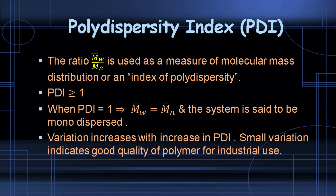The polydispersity index (PDI) is the ratio of weight average molecular mass divided by number average molecular mass. Generally, PDI is greater than 1. If PDI equals 1, then the weight average molecular mass equals the number average molecular mass, and in this case the system is said to be monodispersed. Variation increases with increasing PDI, and a lower PDI indicates a good-quality polymer suitable for industrial use.